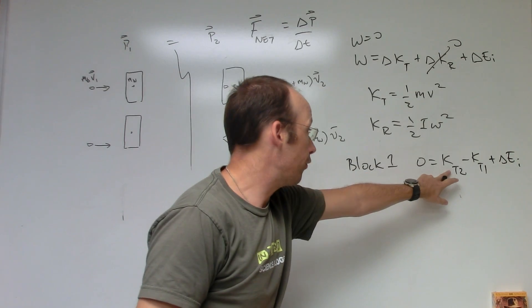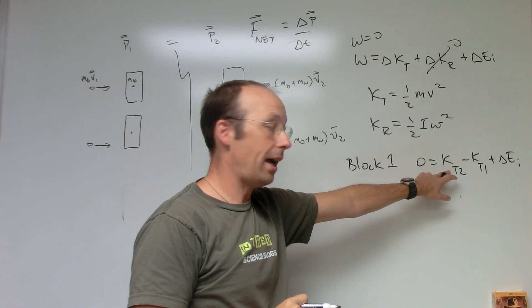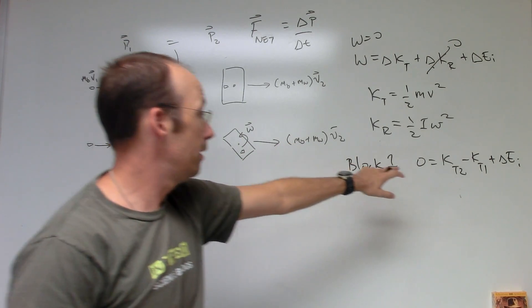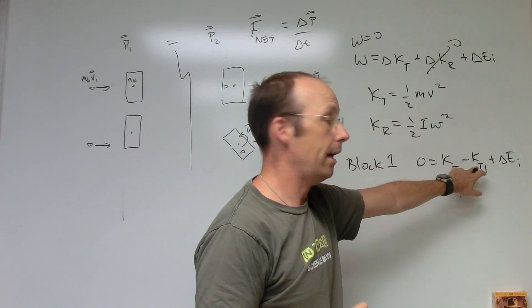I get zero equals K translational two minus K translational one plus delta E internal. So afterwards, it's not moving as fast as it was before. It has a greater mass, but this is going to be smaller than that.